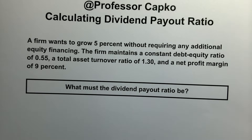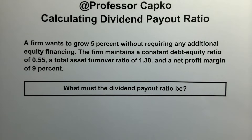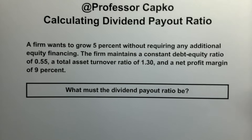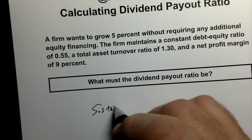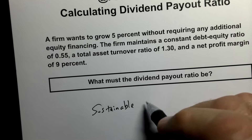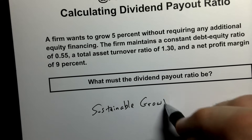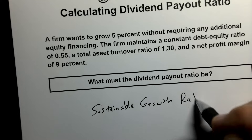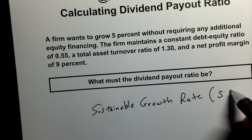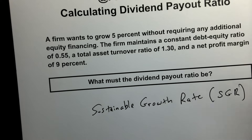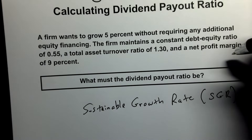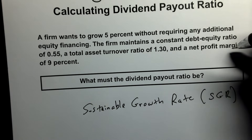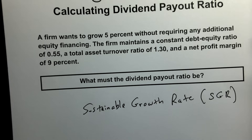We're going to have to go through several steps to solve this. To determine the dividend payout ratio, we're going to have to look into something called the sustainable growth rate, otherwise known as the SGR. We're going to use that to calculate the dividend payout ratio, and we're also going to be doing something called DuPont analysis.